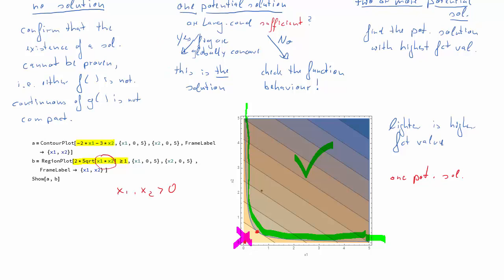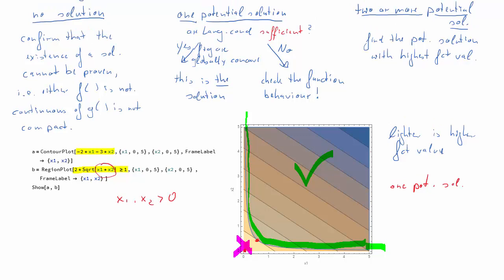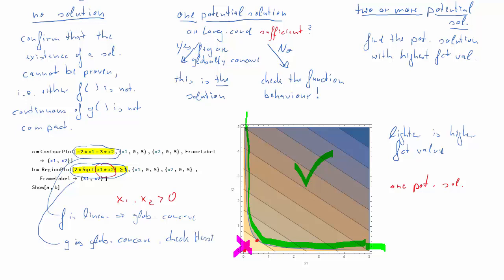We are in the middle case — one potential solution — and the question is whether the Lagrange conditions are sufficient or only necessary. The function negative 2x1 minus 3x2 is linear, so it is globally concave, since all linear functions are both concave and convex. Checking the Hessian of the constraint, we find it is negative semidefinite everywhere, so g is also globally concave. Therefore the Lagrange conditions are not only necessary but also sufficient, and that one potential solution we found is indeed the solution to the problem.